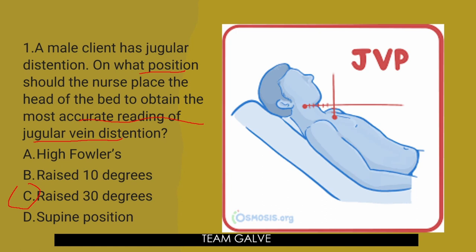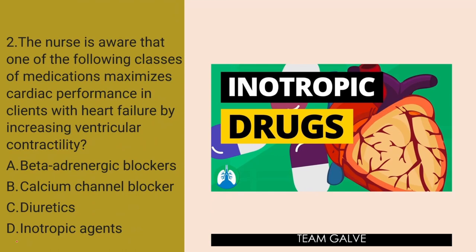Question number two. The nurse is aware that one of the following classes of medications maximizes cardiac performance in clients with heart failure by increasing ventricular contractility. Is it A, beta-adrenergic blocker? Is it B, calcium channel blocker? Is it C, diuretics? Or D, inotropic agents?